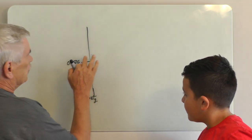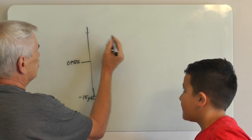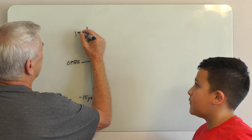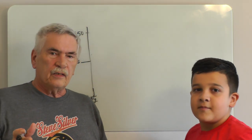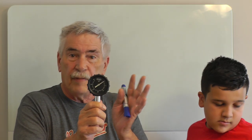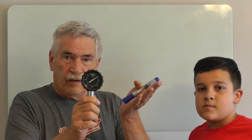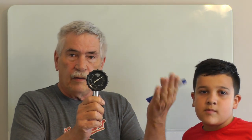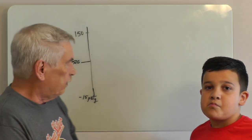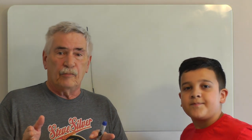Anything above this line is positive pressure; anything below is negative pressure. Let's use an example — say 150 PSI. When you see PSI, that means gauge pressure. If we take a gauge like this one, you can see the needle is on zero. But we know there's atmospheric pressure around the gauge — it's not measuring that actual pressure. Gauge pressure is measured relative to atmospheric pressure. So if we have 14.7 PSI and subtract that off, we're left with zero.